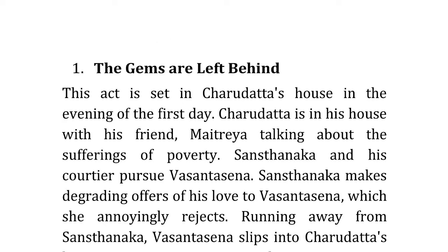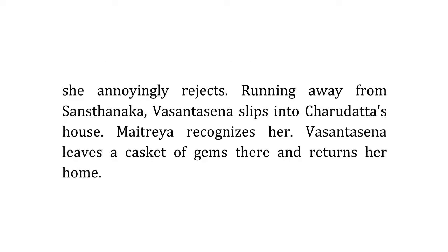Act 1: The Gems are Left Behind. This act is set in Charudatta's house in the evening of the first day. Charudatta is with his friend Maitreya, talking about the sufferings of poverty. Just then, Sansthanaka and his courtier are found pursuing Vasantsena. Sansthanaka makes degrading offers of love to Vasantsena, which she rejects. Running away, Vasantsena slips into Charudatta's house, where Maitreya recognizes her. Later, Vasantsena leaves a casket of jewels there and returns home.